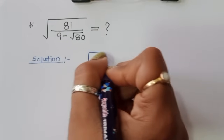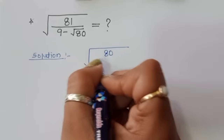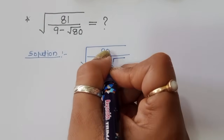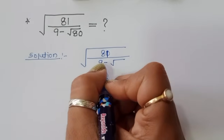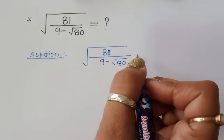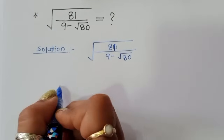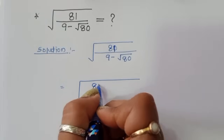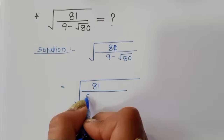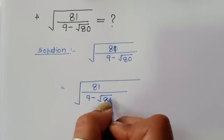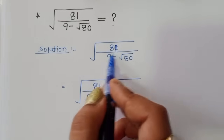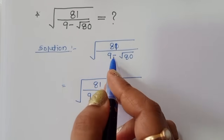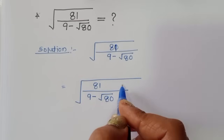So we have square root of 81 divided by 9 minus square root of 80. This is the question. So we can work with 81 — square root of 81 divided by 9 minus square root of 80. First, we have to rationalize this denominator.